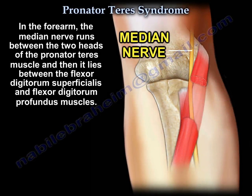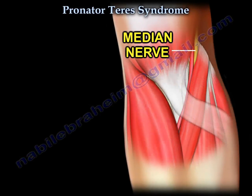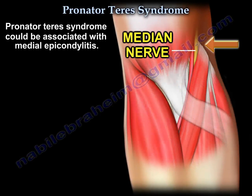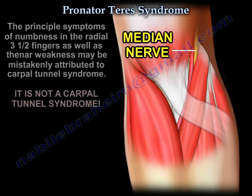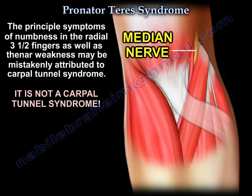The median nerve then lies between the flexor digitorum superficialis and the flexor digitorum profundus muscles. Pronator teres syndrome could be associated with medial epicondylitis. The principal symptoms of numbness in the radial three and a half fingers as well as thenar weakness may be mistakenly attributed to carpal tunnel syndrome, but it is not carpal tunnel syndrome.